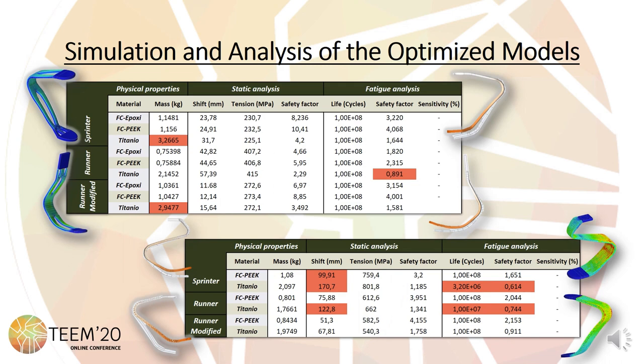The topologically optimized models follow a similar trend as the initial models. The runner models suffer much higher deformation compared to the other models, even exceeding the limit. The fatigue simulation accentuates this, leaving the maximum stress very close to the fatigue limit. Regarding mass, it has been possible to reduce the volume of all models making them lighter. However, the lattice structures suffer from very high stress levels and deformation in some models, and the fatigue simulation corroborates the poor design of the Sprinter and Runner models.